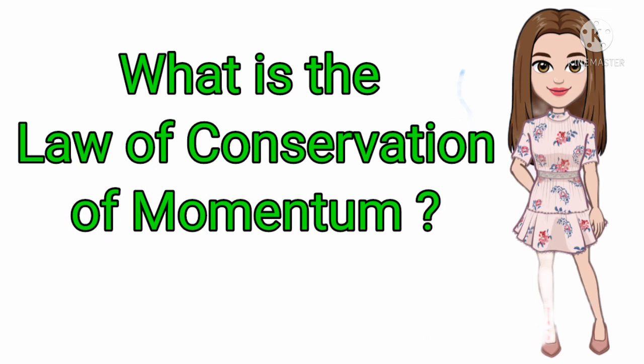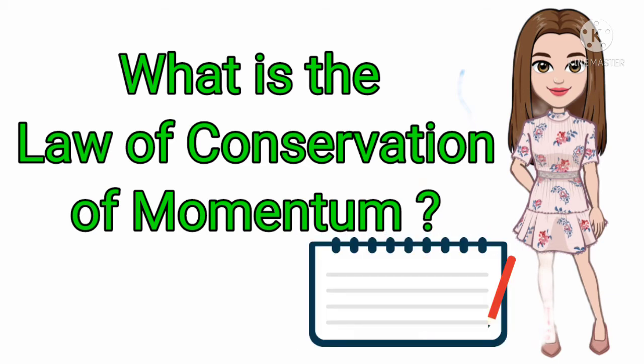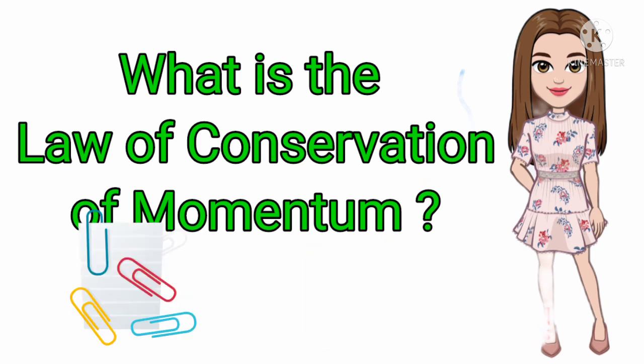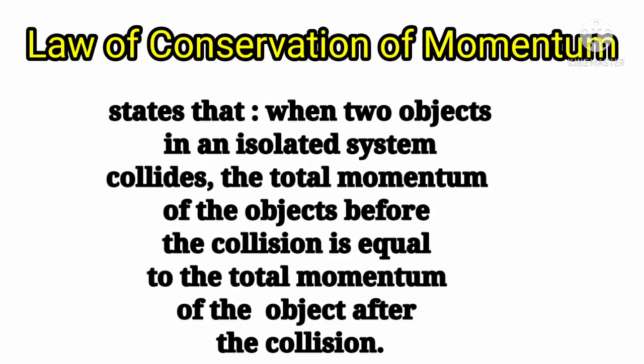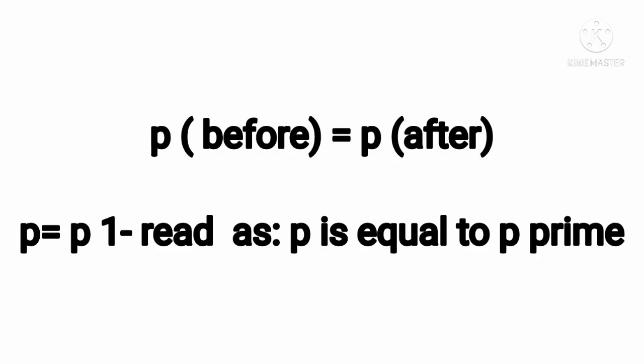You might be asking: what is the law of conservation of momentum? Well, students, get your notes and pens and start to write down notes. The law of conservation of momentum states that when two objects in an isolated system collide, the total momentum of the objects before the collision is equal to the momentum of the objects after the collision. Thus, in mathematical formula, P is equal to P prime.